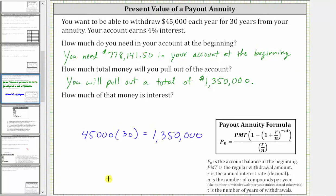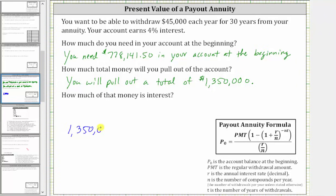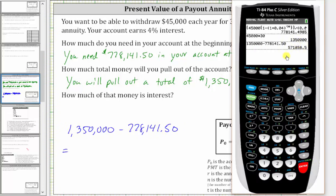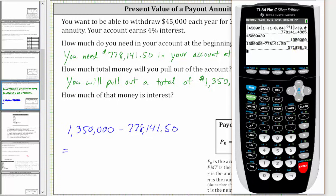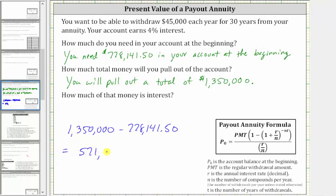And now for the last question: how much of that money is interest? To determine the interest, we take the money you pulled out and subtract the money you put in — which is the beginning balance. That gives us $1,350,000 minus $778,141.50, which equals $571,858.50. So $571,858.50 of the $1,350,000 is interest.